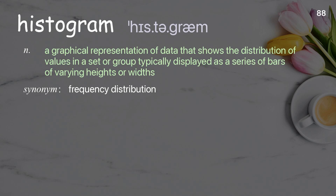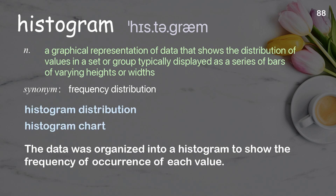Histogram: a graphical representation of data that shows the distribution of values in a set or group, typically displayed as a series of bars of varying heights or widths. Examples: histogram distribution, histogram chart. The data was organized into a histogram to show the frequency of occurrence of each value.